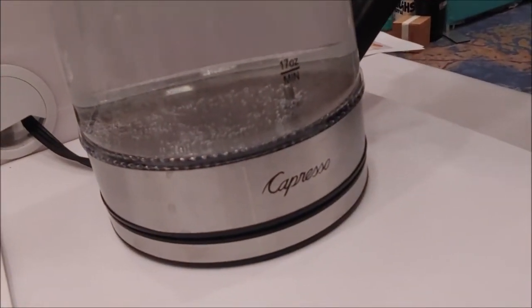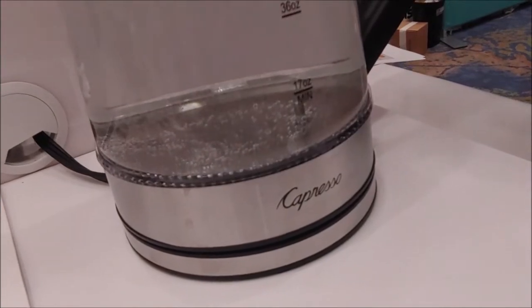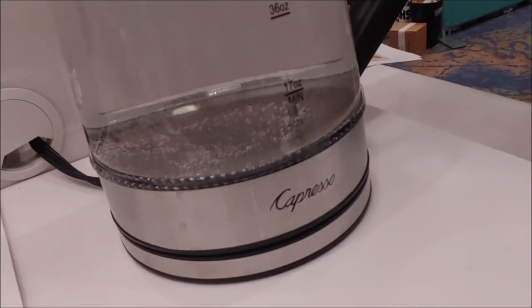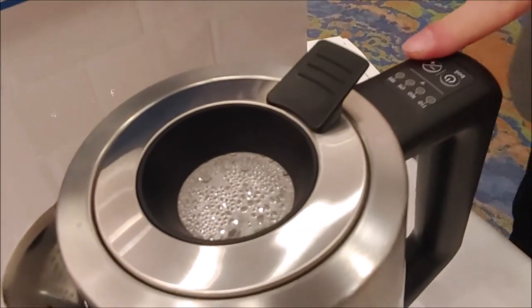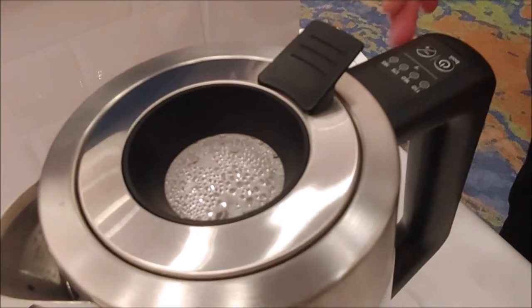There's five different temperature presets, and then what makes this also unique is there's a 110 setting for baking. So if you're making bread and you need that perfect water temperature, this has a preset for that.